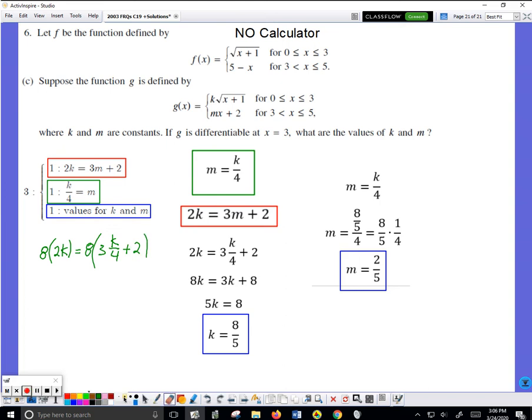So the 4 distributes, you get 8k. Four distributing here, the 4s divide out because these are all factors, plus 8. Solving for k, subtract 3k from both sides. This becomes 5k. K is equal to 8 over 5.